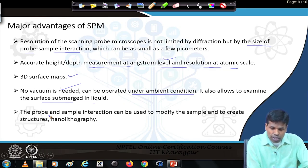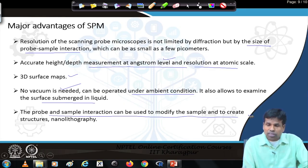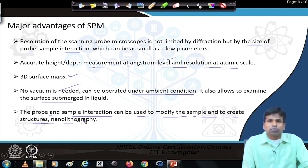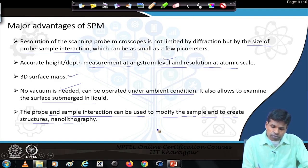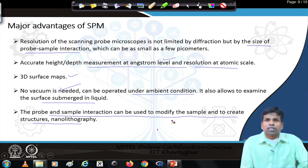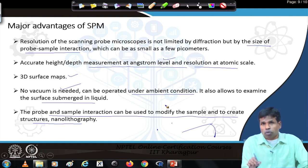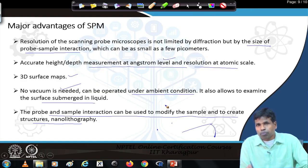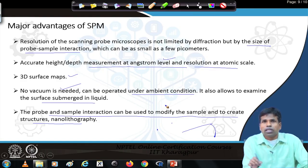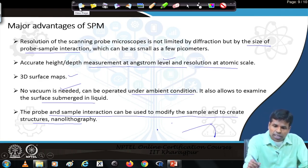The probe-sample interaction can also be used to modify the sample — we can create structures and do nanolithography. We can position one atom in one place and another atom in another place. We can make nanowires, touch them with the probe tip, bend them, tune them, or turn them. This kind of atomic-scale manipulation can be done using scanning probe microscopy techniques.